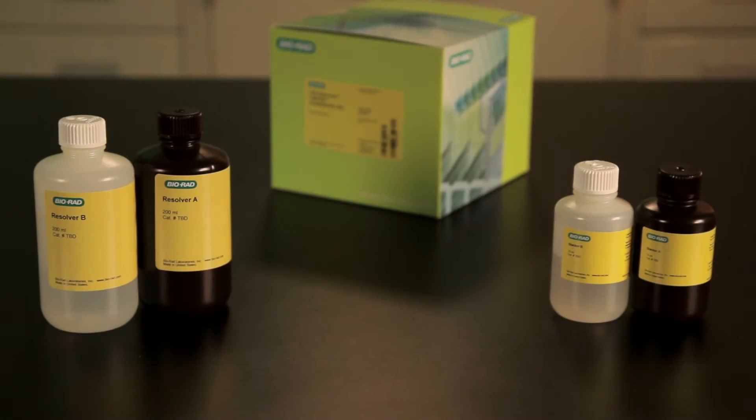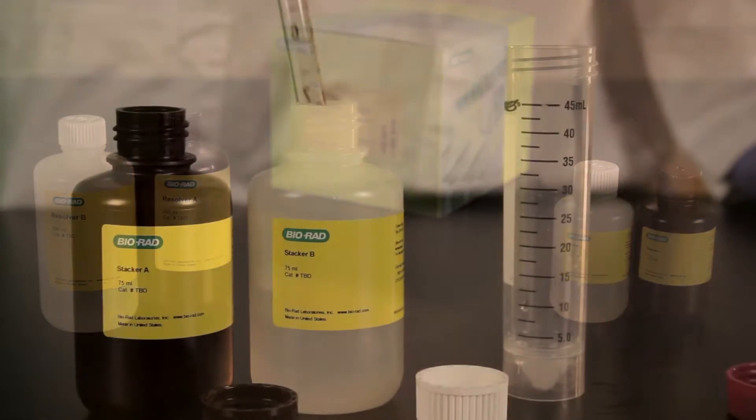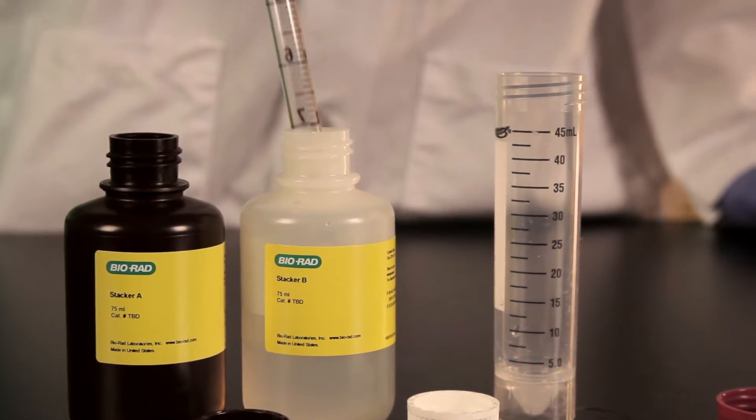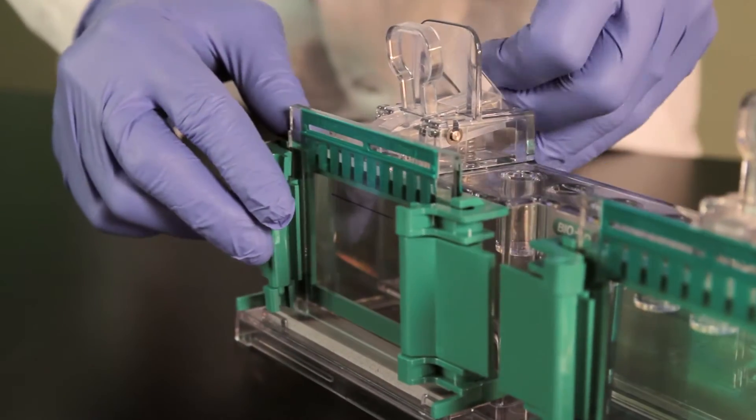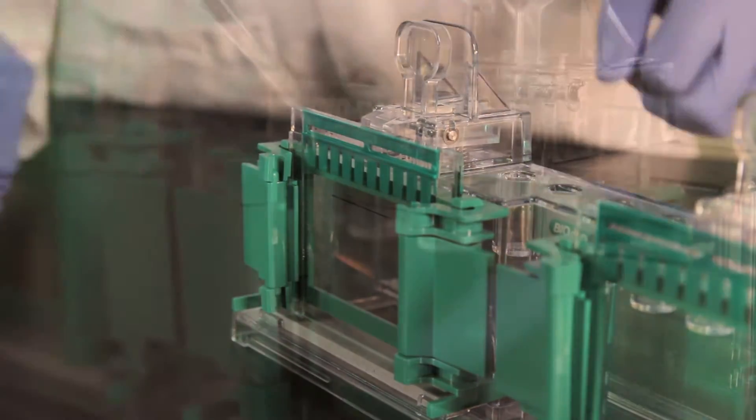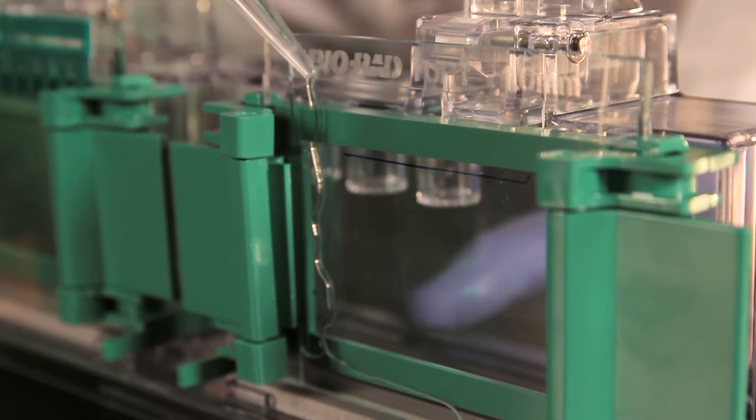TGX and TGX Stain Free Precast Gels are fast and convenient, but did you know you can also hand cast your own? TGX Stain Free Fast Cast Kits make gel casting easy, can be run in as little as 20 minutes, and provide superior transfer efficiency. Stain Free Fast Cast Gels last up to one month and can be visualized in five minutes or less without staining. So let's go pour some gels.